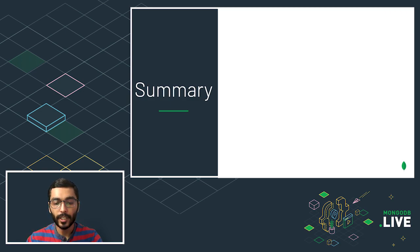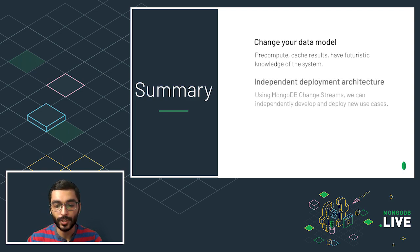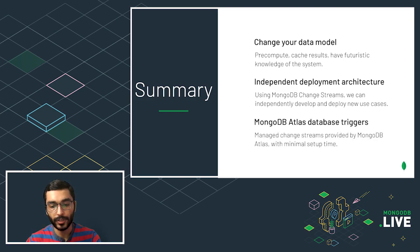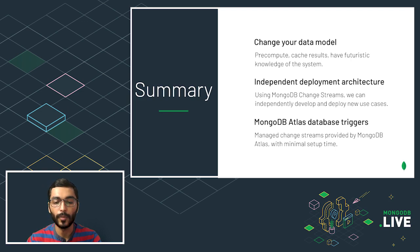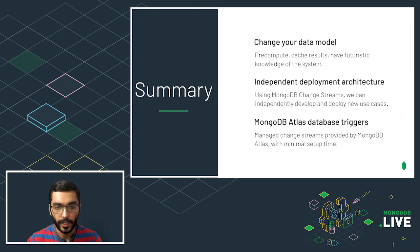To summarize: change your data models using the techniques we've learned, use MongoDB Change Streams for independent plug-and-play deployment architectures, and use MongoDB Atlas Database Triggers to simplify your use of Change Streams. That's how you can implement real-time analytics for millions of users per second without crashing your applications. Thank you!